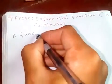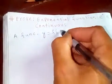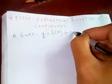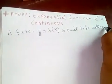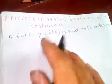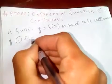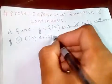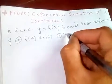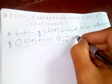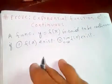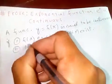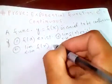Continuity means a function — let's say y equals f of x — is said to be continuous if: number one, f of a is defined; number two, the limit as x tends to a of f of x exists; and third condition, the limit as x tends to a of f of x is equal to f of a.